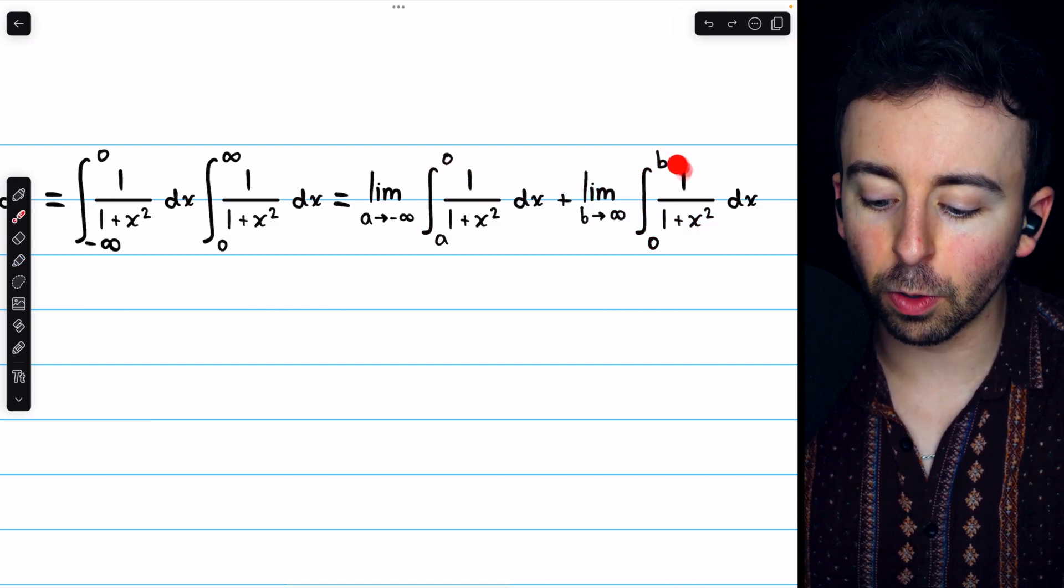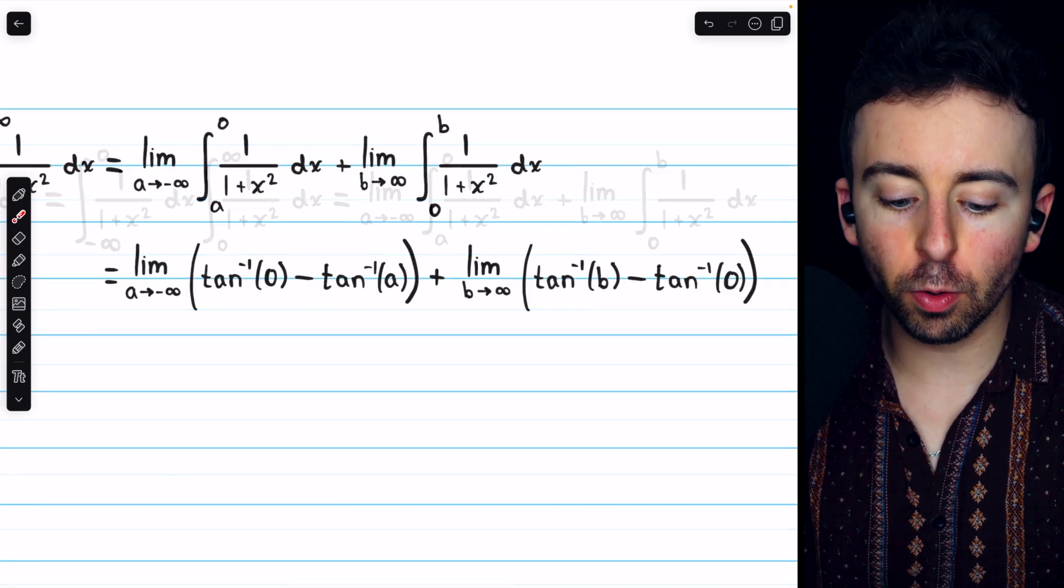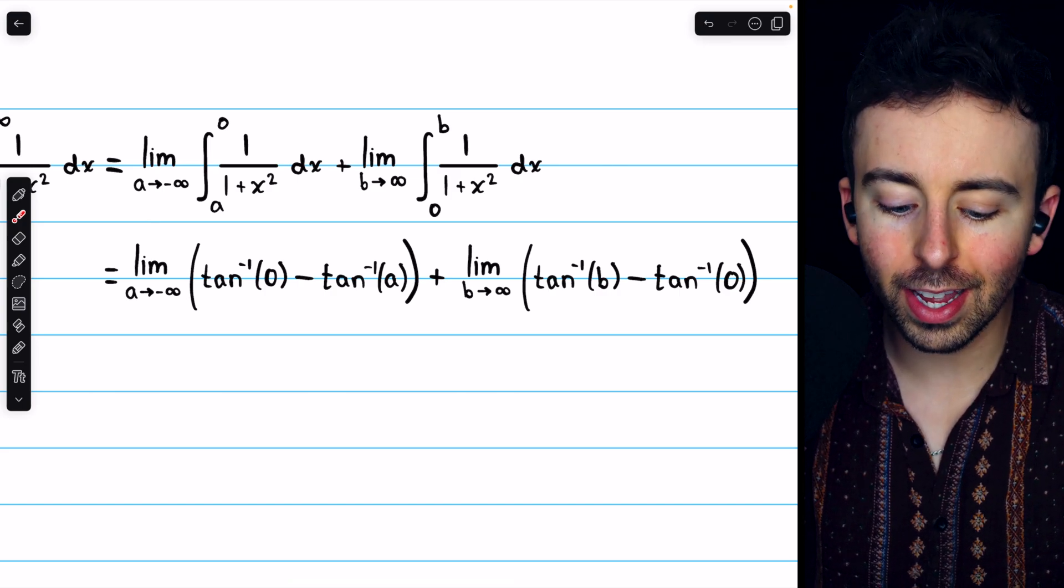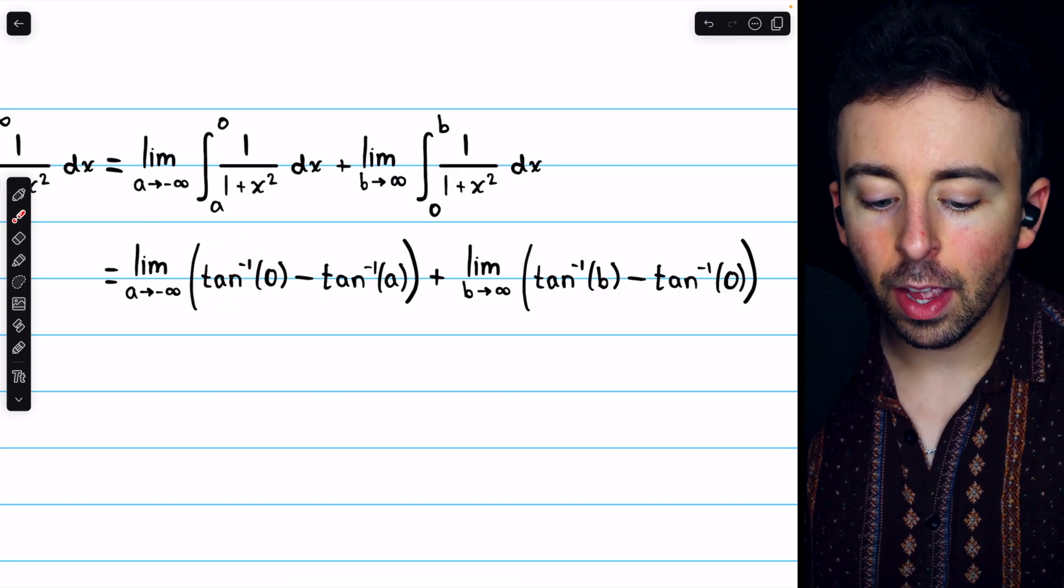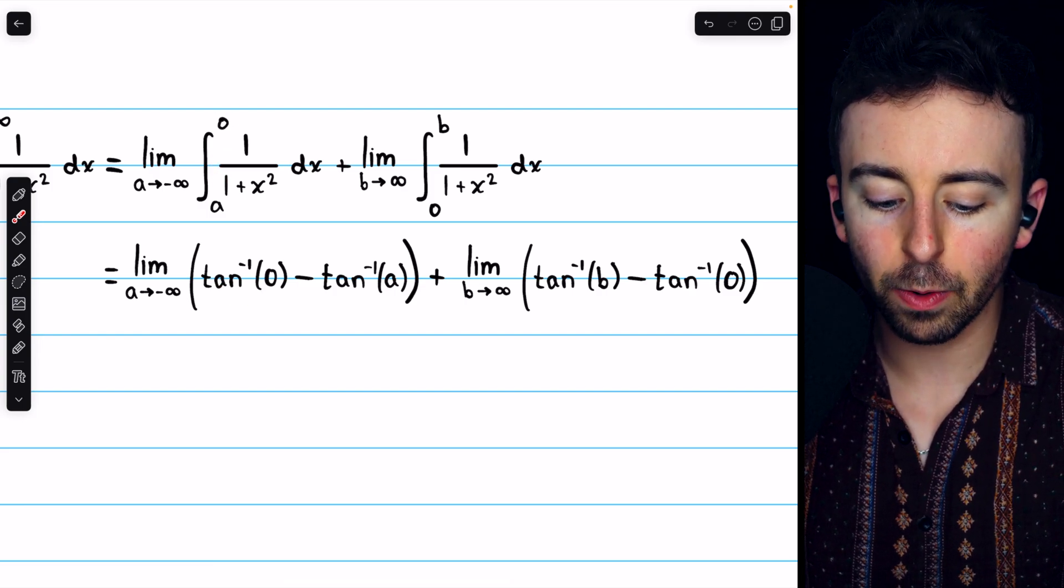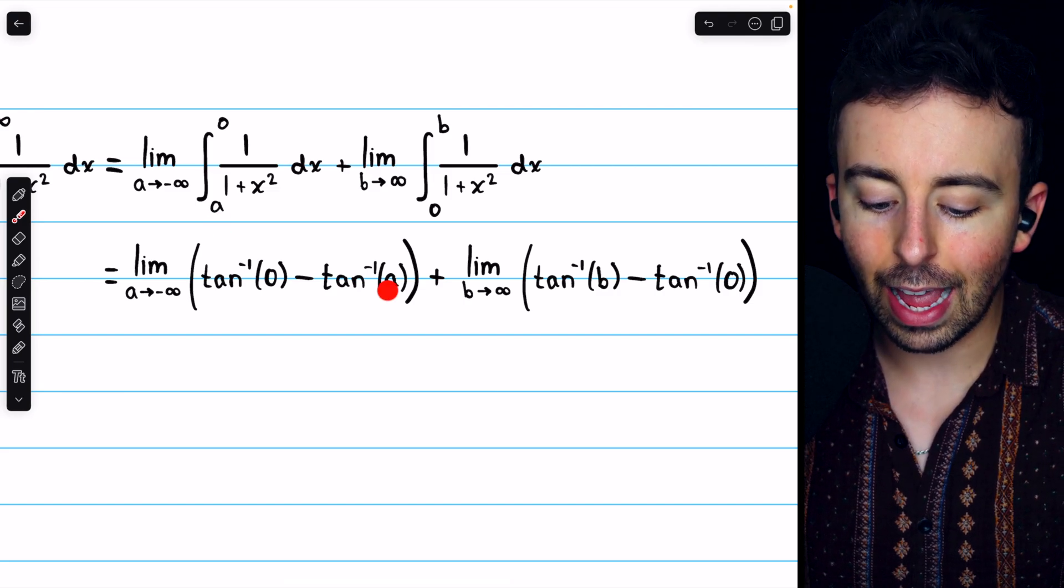Now, we just have two ordinary integrals that we have to evaluate, and then evaluate those limits. The integral of 1 over 1 plus x squared, hopefully you recall from calc 1, that's arc tan. So, when we integrate this, we're going to have arc tan of the upper bound, 0, minus arc tan of the lower bound, a.